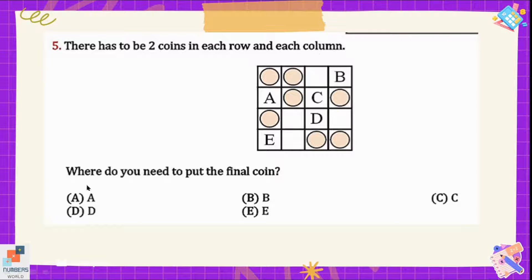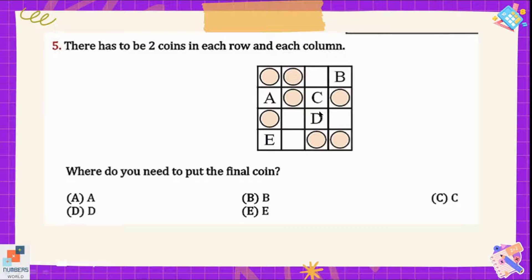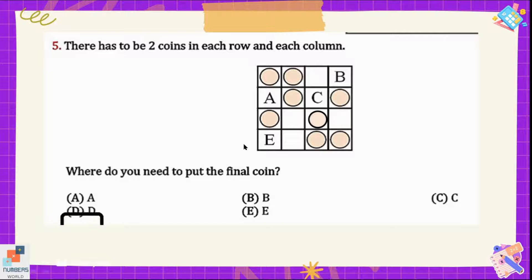Question number five: there have to be two coins in each row and each column — where do you need to put the final coin? We can see there are two circles in the first, second, and fourth columns but not in the third, and two circles in the first, second, and fourth rows but only one in the third row. So we place our circle at position D, giving two circles in both the third column and third row. Option D is the correct answer.